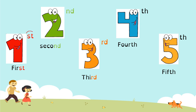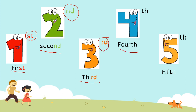Look at these two letters. Here we have 'first.' Number one is the first. Number two is the second. Number three is the third. Number four is the fourth. And number five is the fifth.